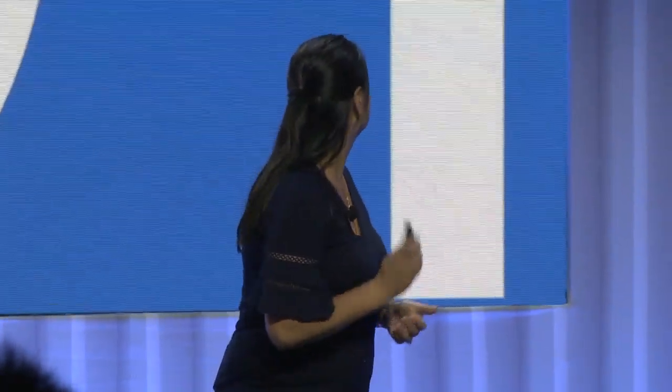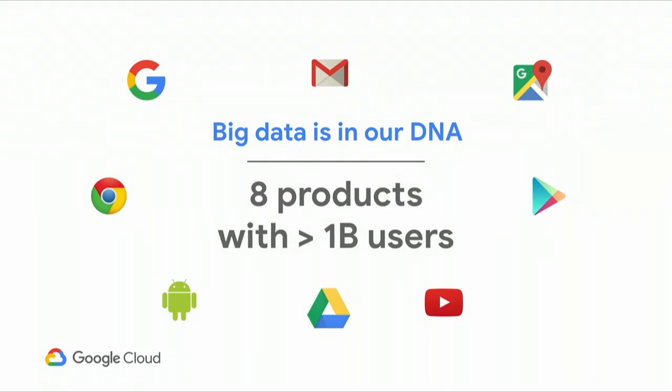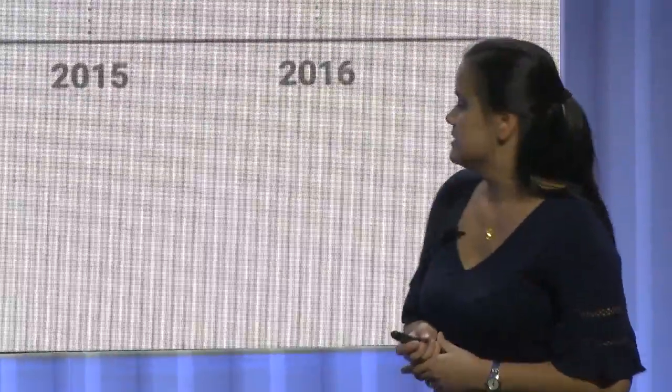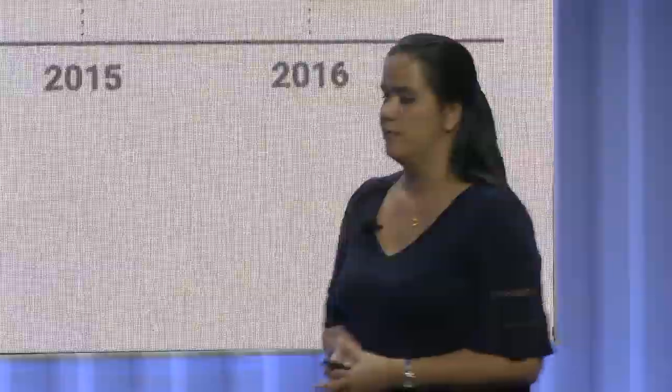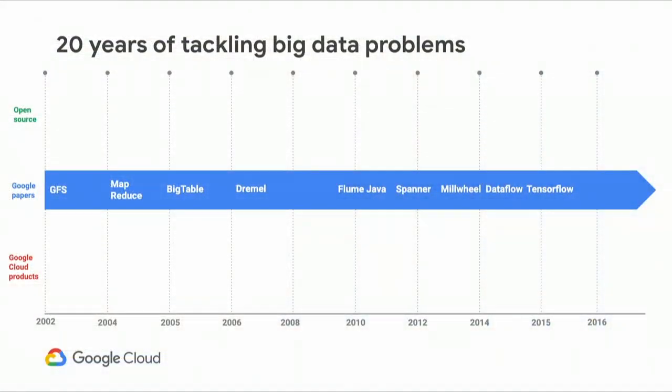Let's start with why. Big data is in our DNA at Google. We have eight products with over one billion users. A lot of the products we're making available to you to solve these problems are things we use internally that we've made available to the community. This started in 2002, where we've been innovating on lots of different products.